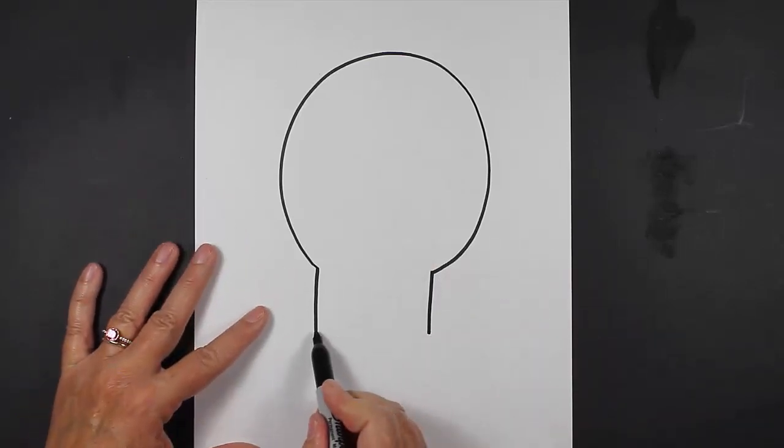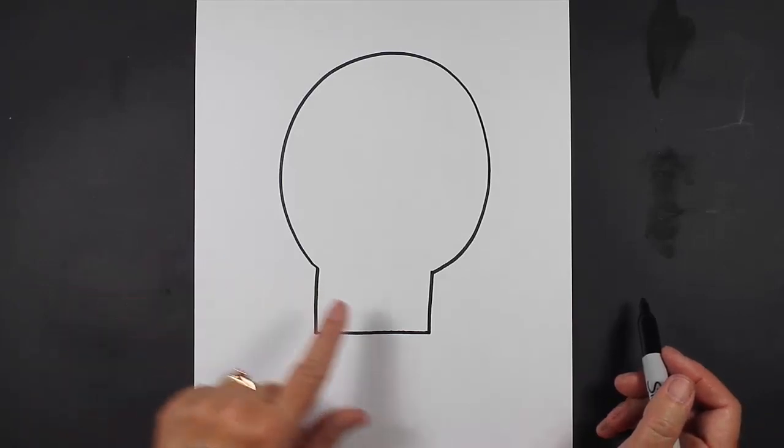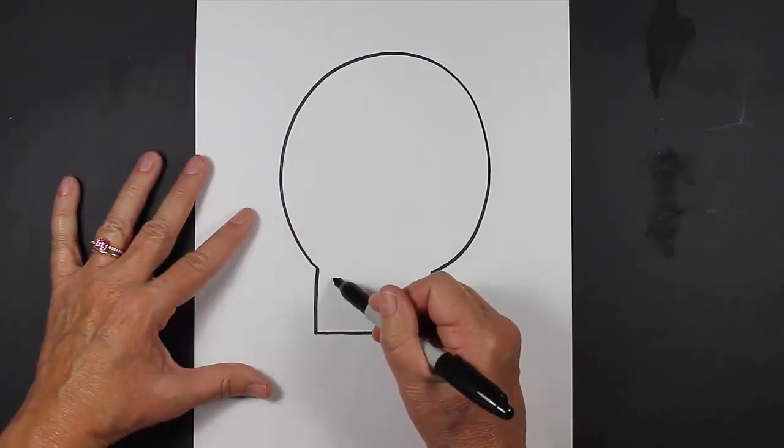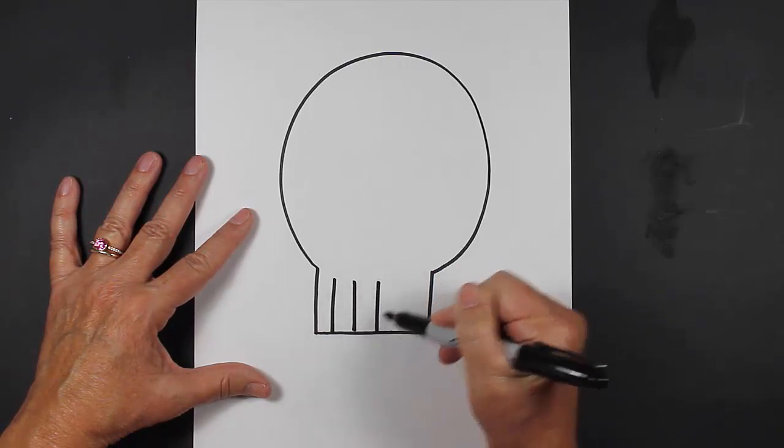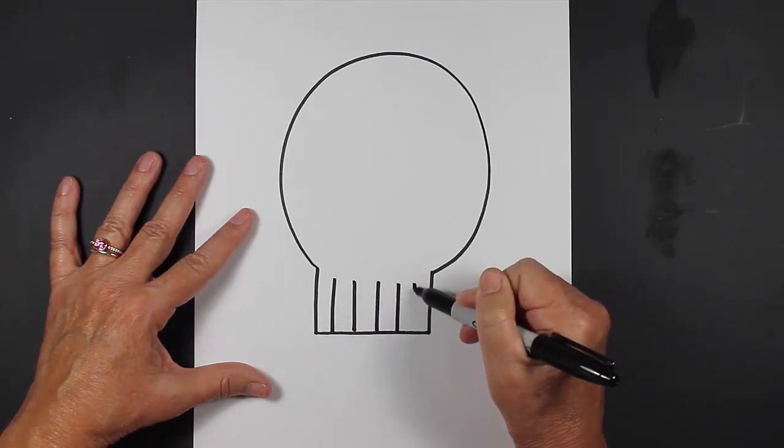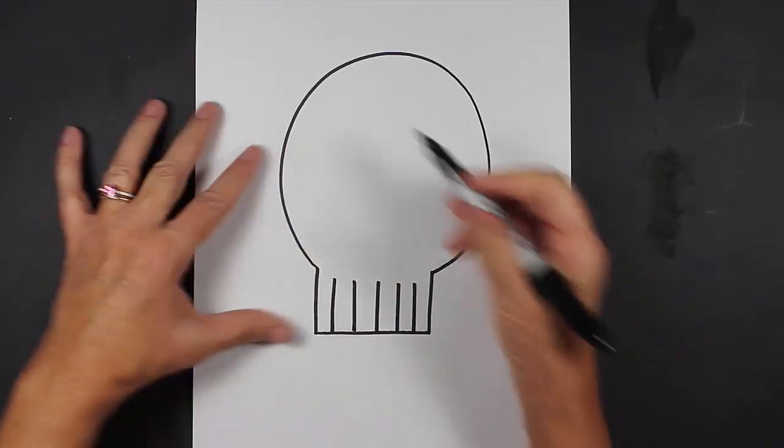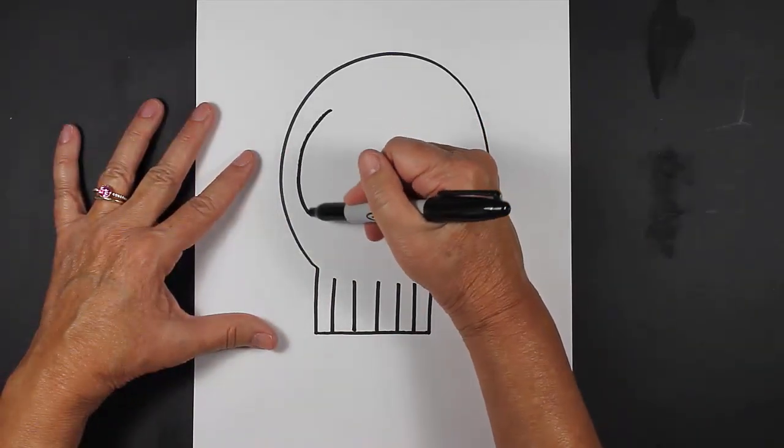You're going to make some straight lines right here. These are going to represent the teeth. And then up here you're going to make some large ovals. These are going to represent the eye sockets.